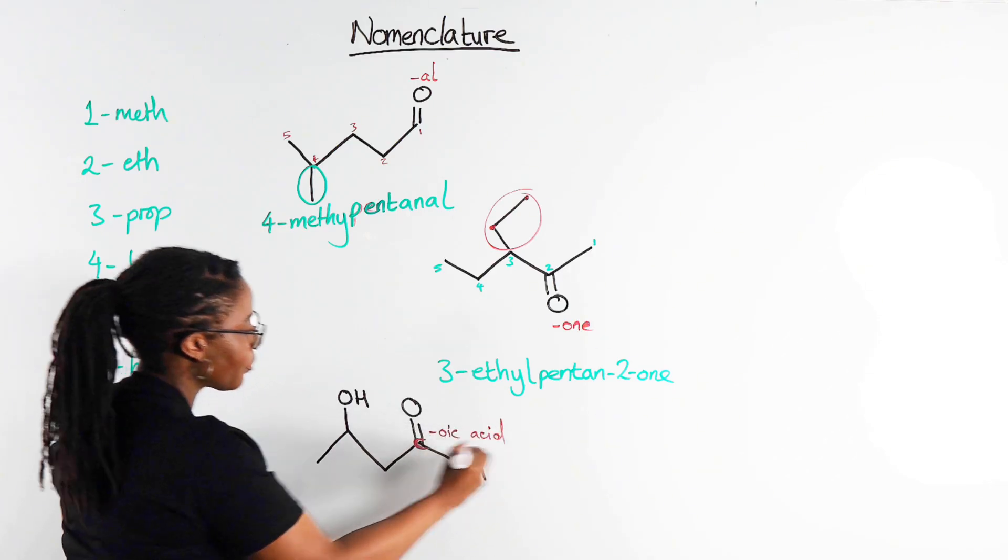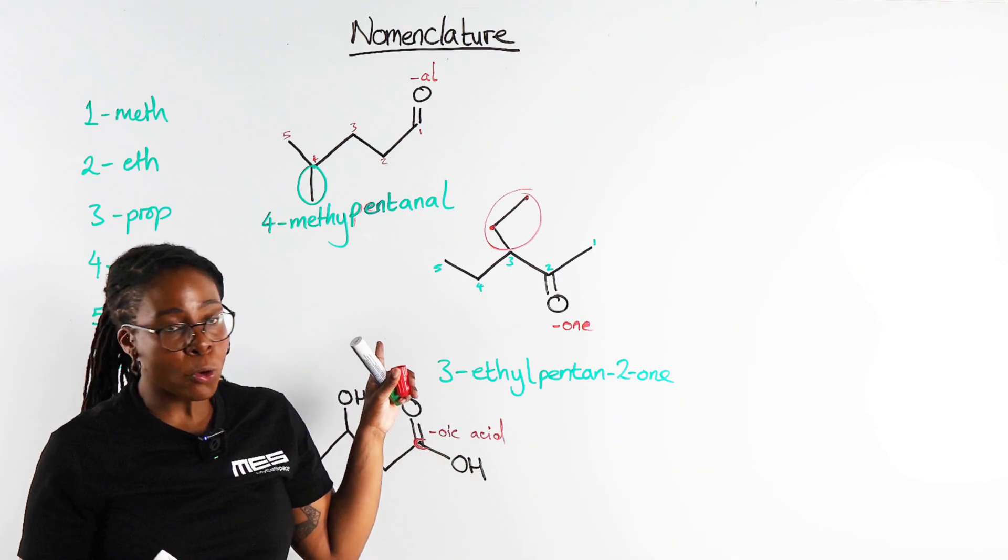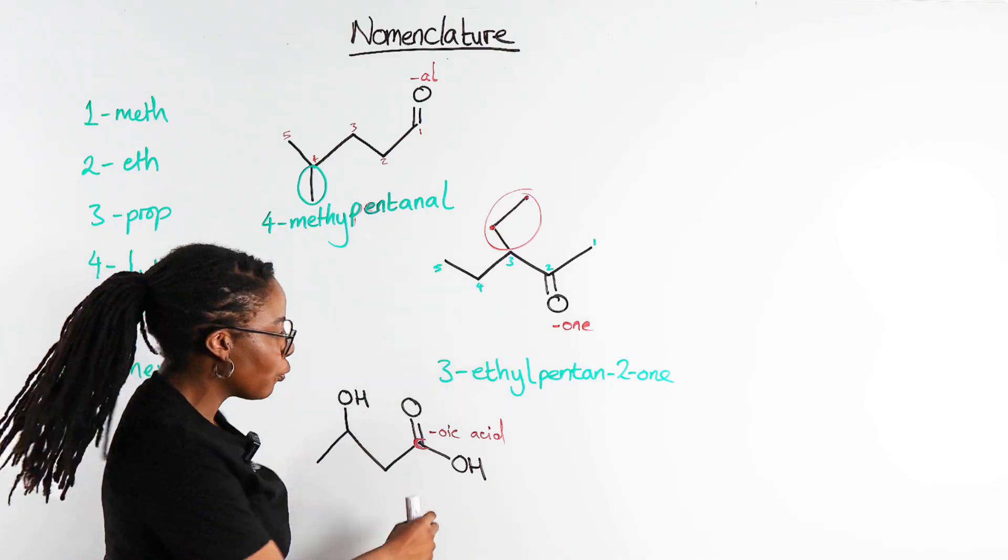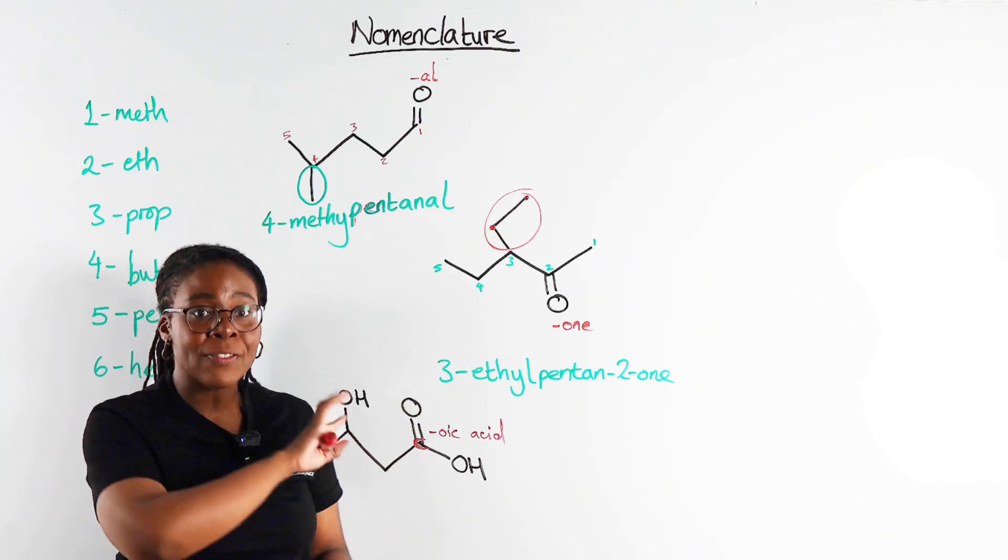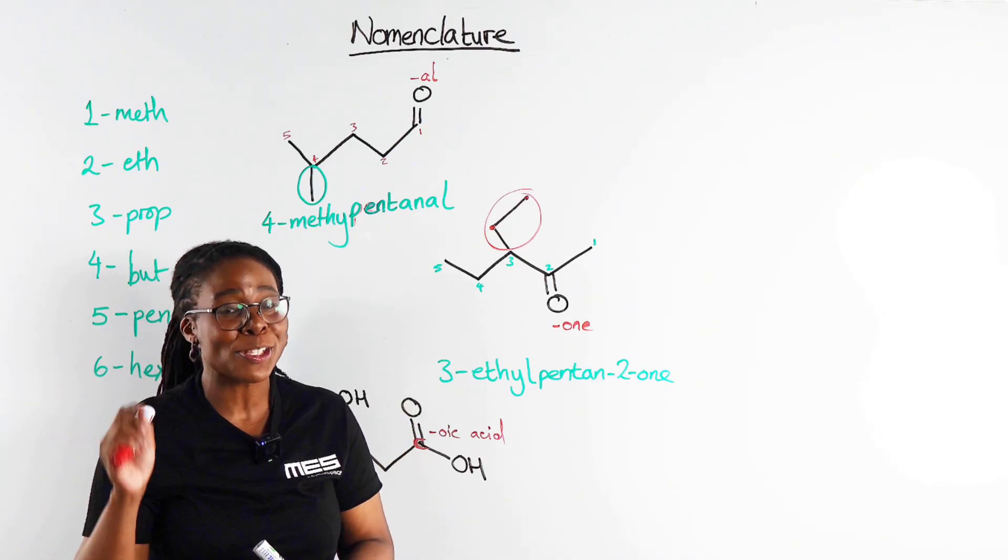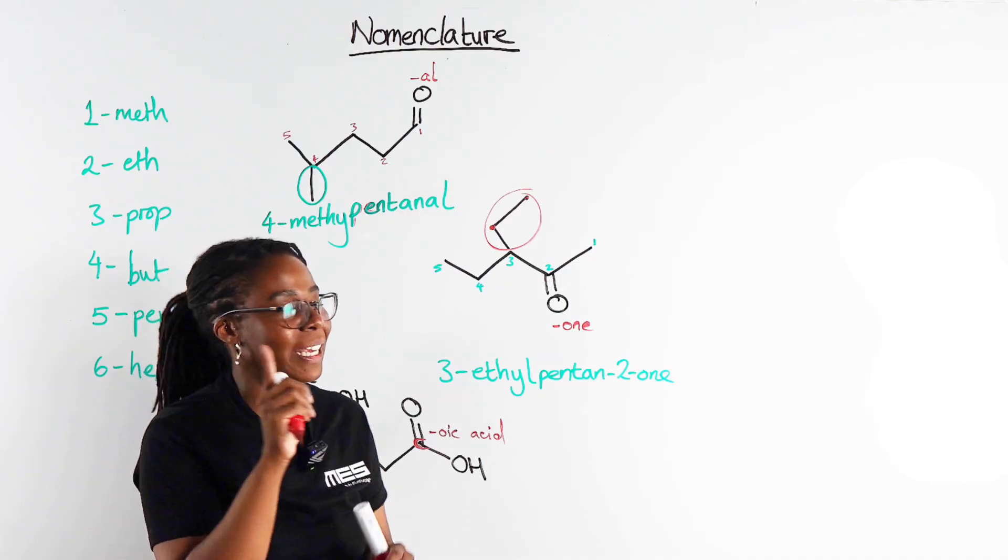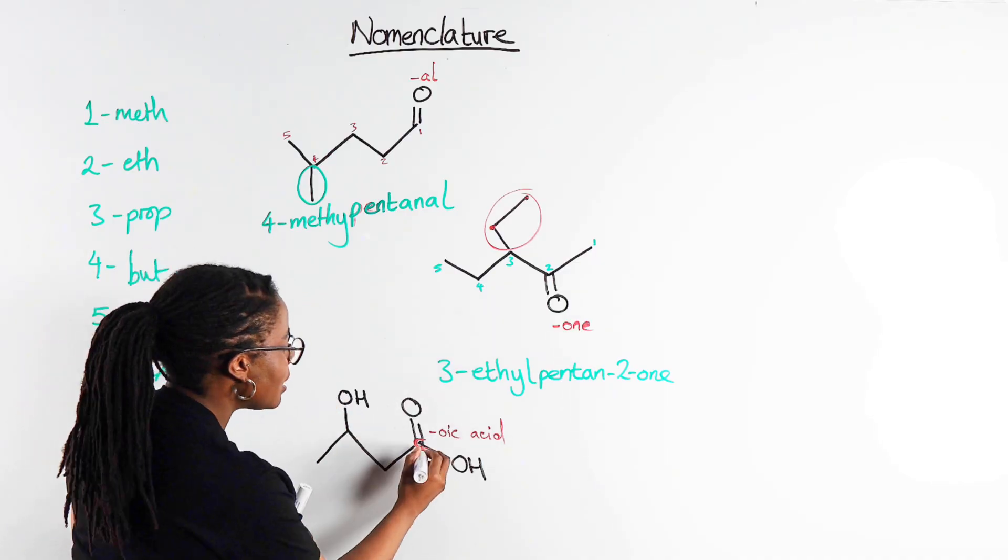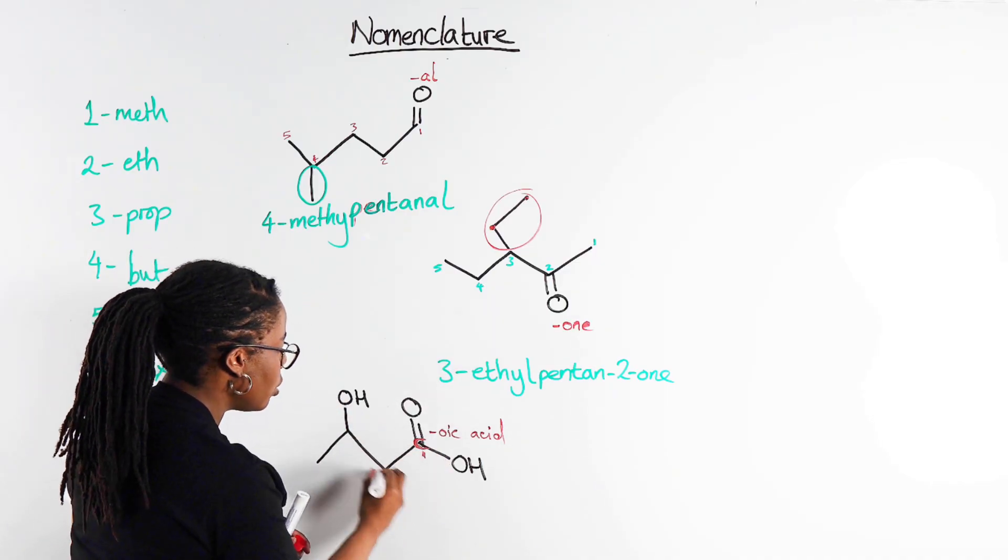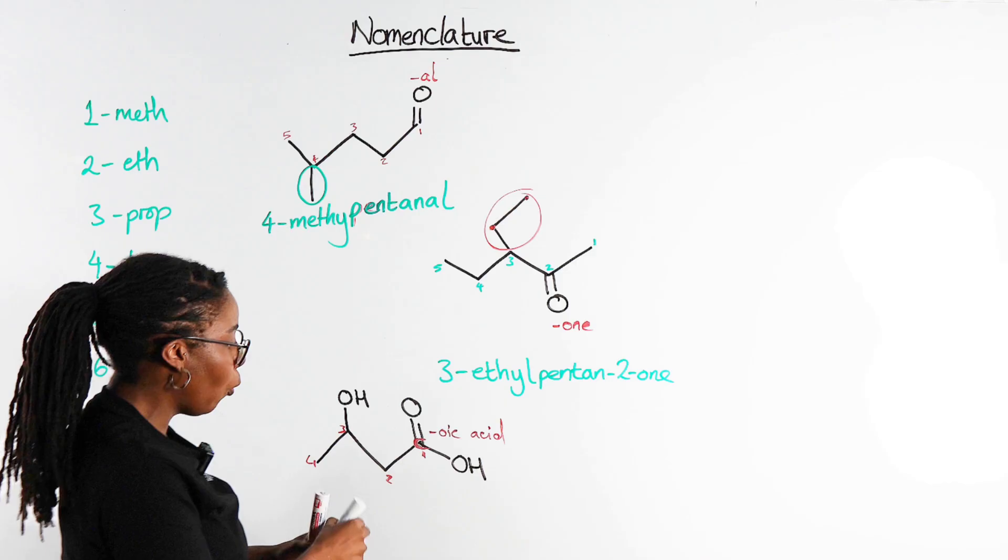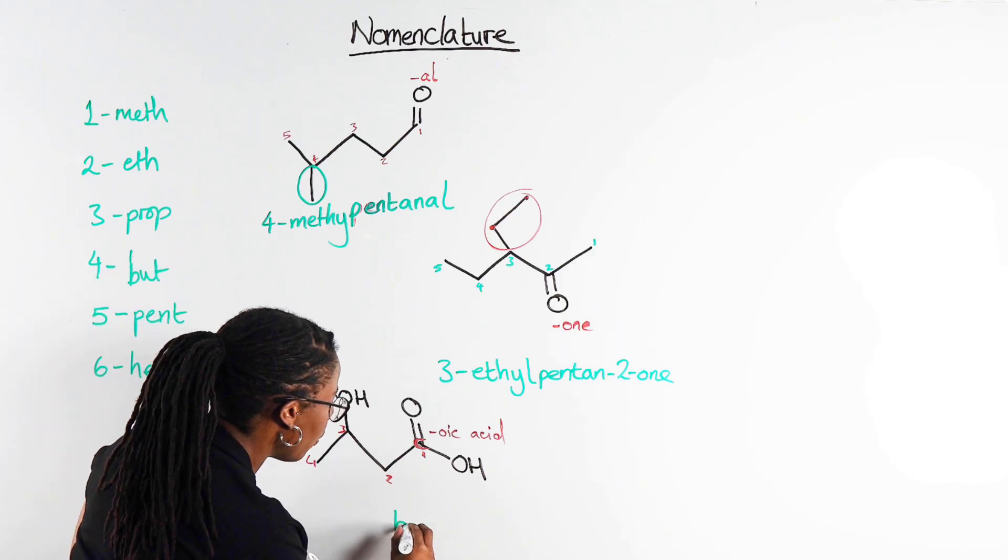Now just like before, because this is the end of the name we want to start counting from this carbon to give our highest priority group the smallest possible number. I know I'm repeating myself but it's going to stick in your head isn't it. So if this is carbon number one then two, three and four, making this four carbons butanoic acid.